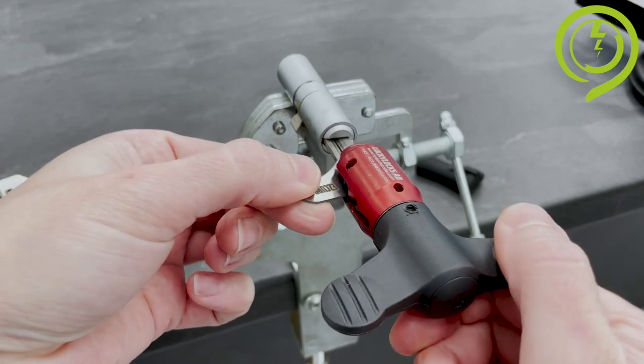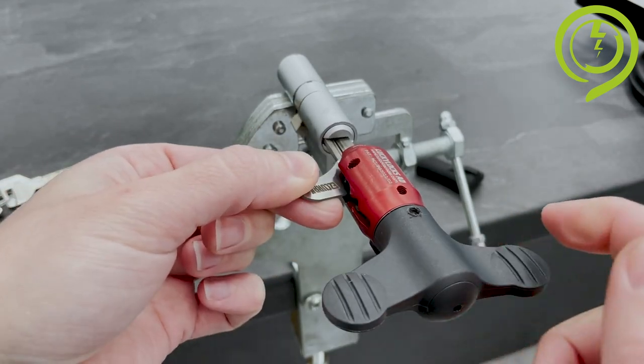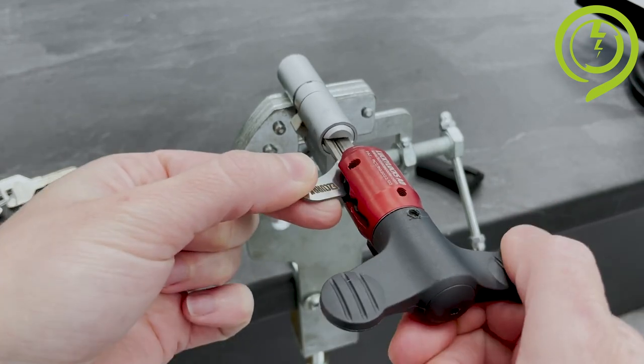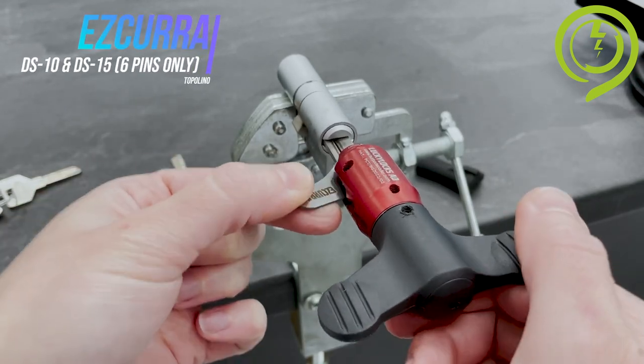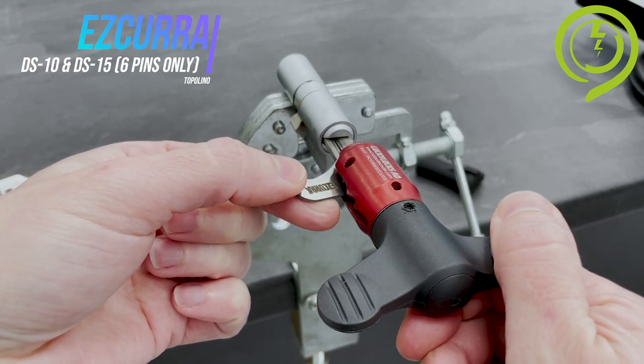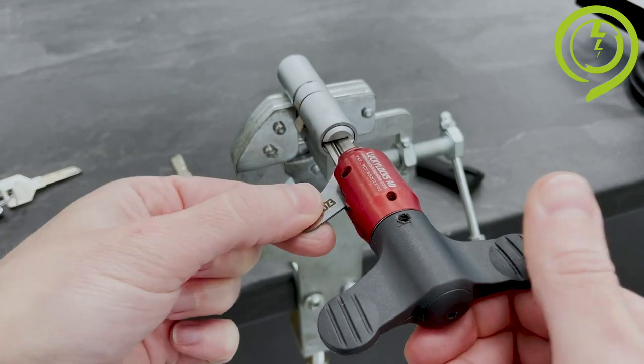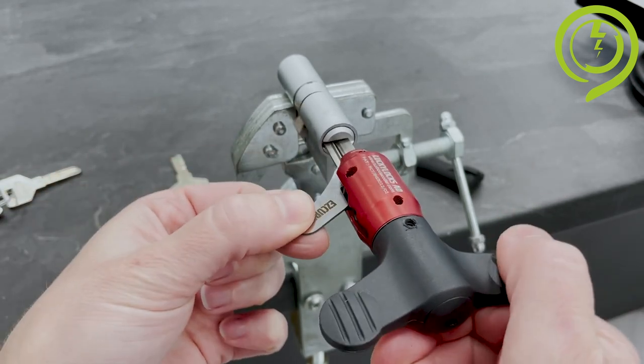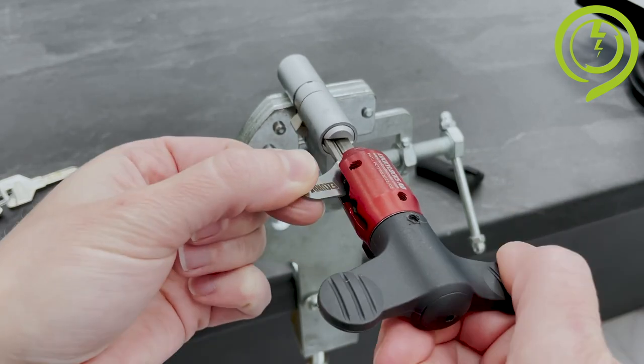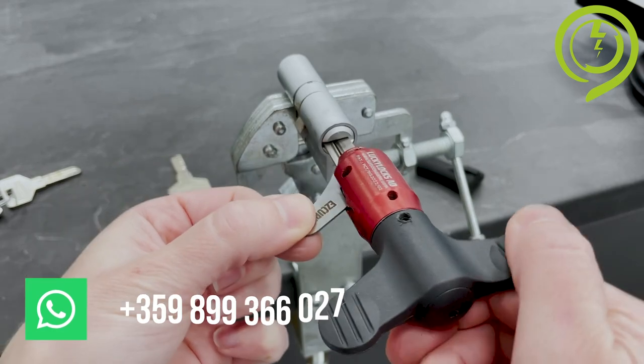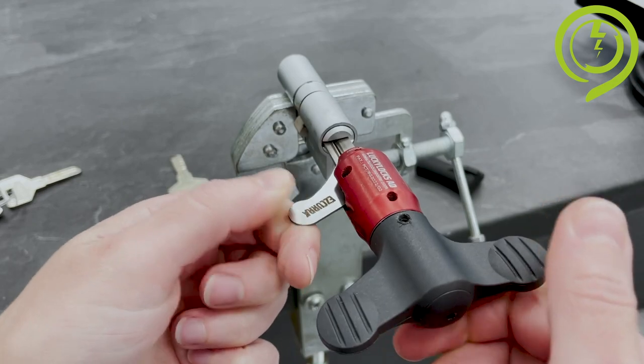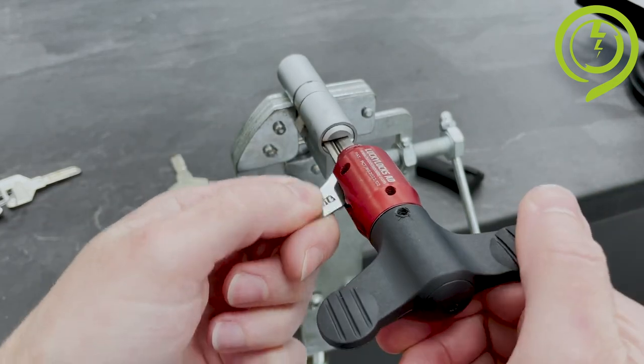Release the pins from the tension—medium amount of tension here, gently. It's important whenever you go right to return it back to neutral position. This way you will release the pins from the tension. Now the faster you perform it, the faster it will be open.